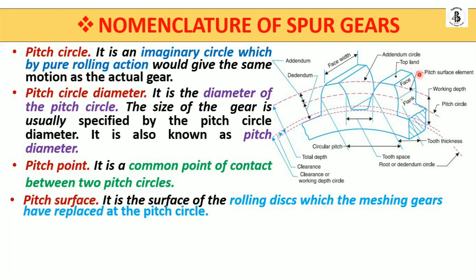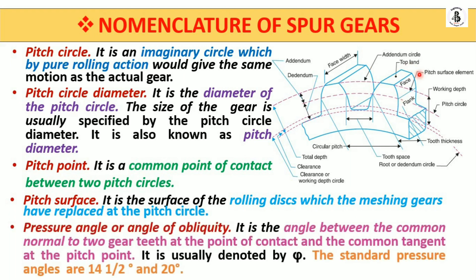An important terminology is the pressure angle, also called the angle of obliquity. This is the angle between the common normal of two gear teeth at the point of contact and the common tangent at the pitch point. It is denoted by psi (ψ), and the standard pressure angles are 14 to 20 degrees for any kind of gear.